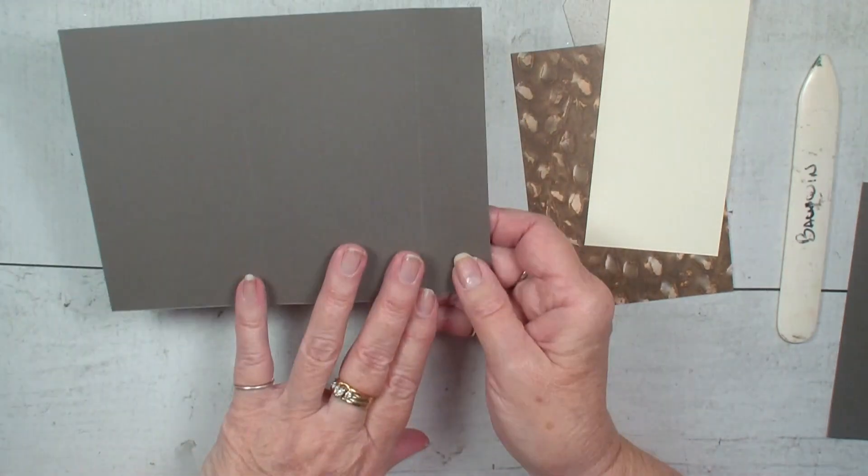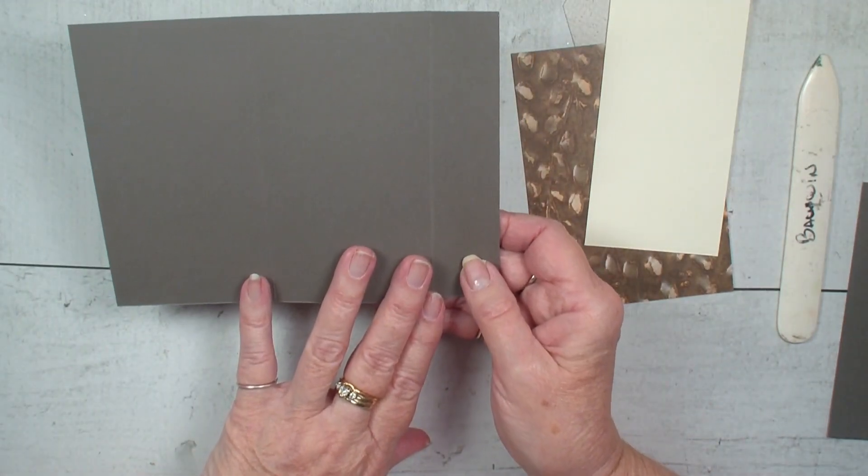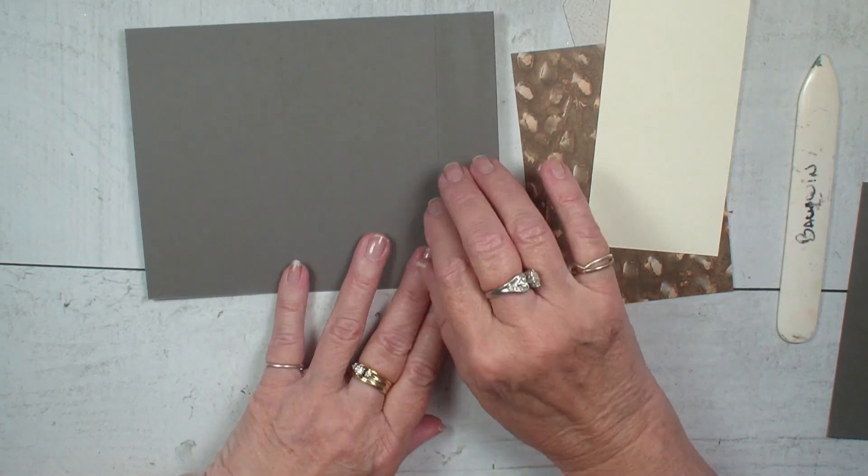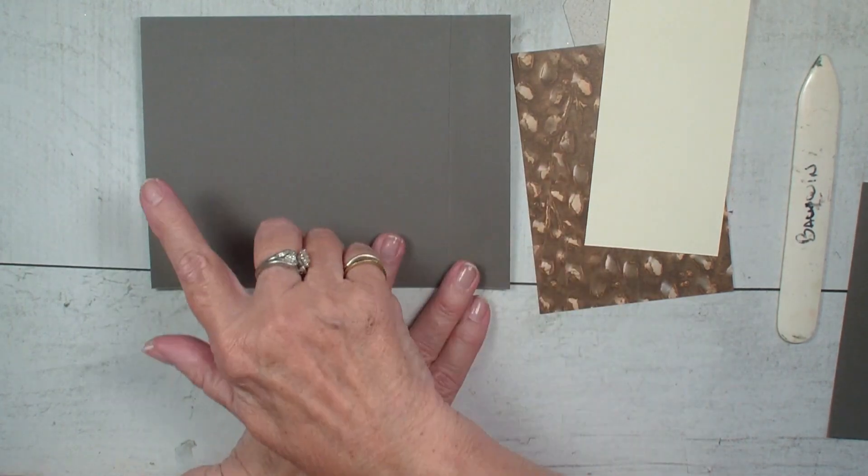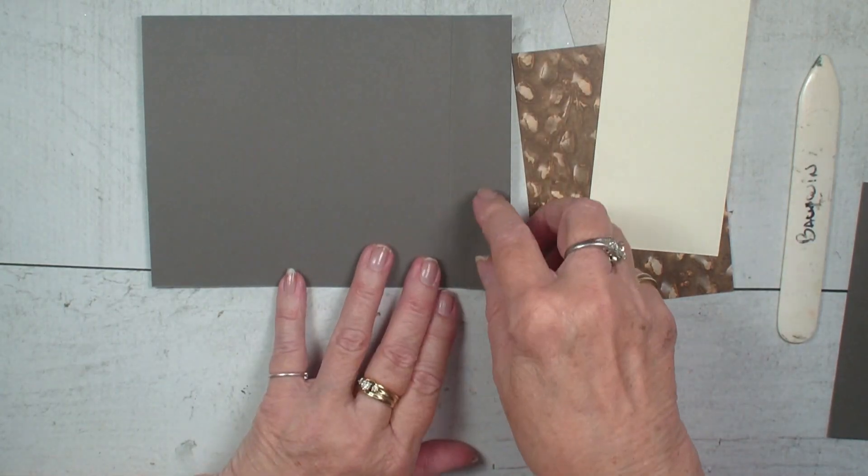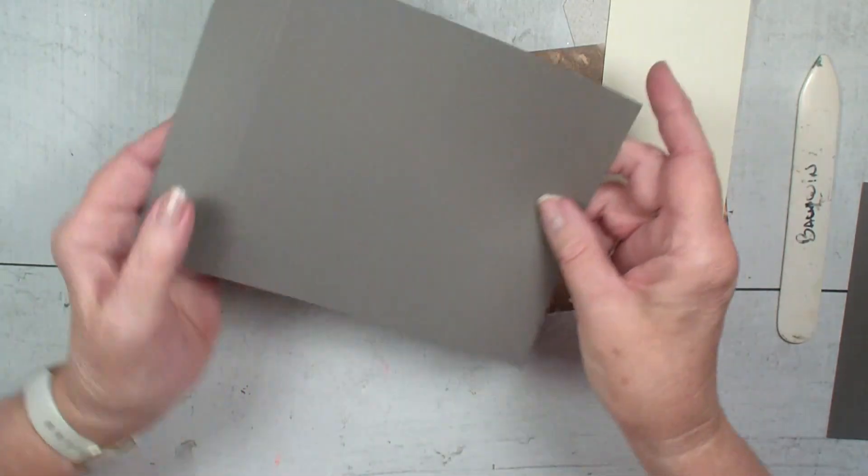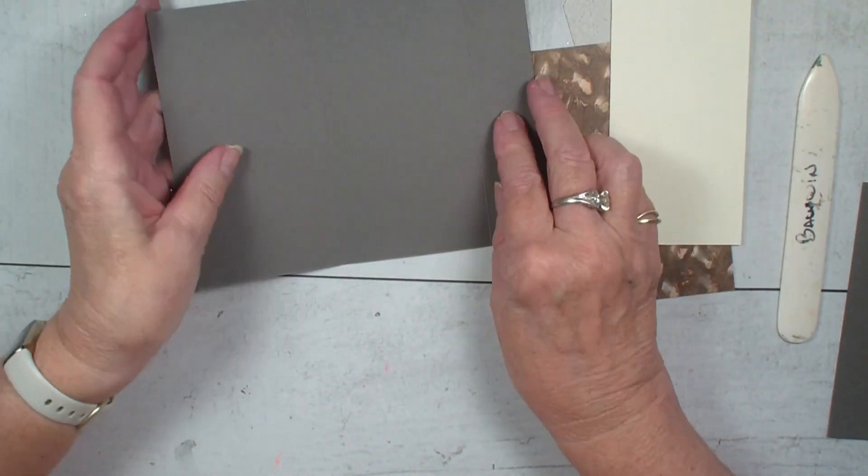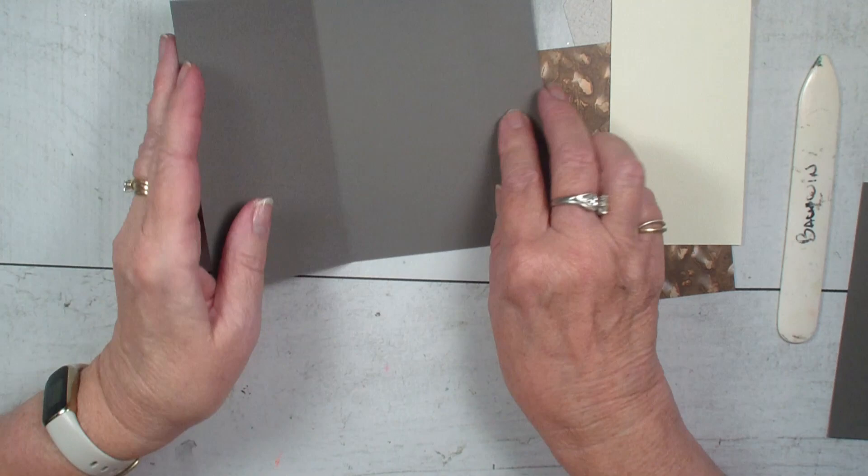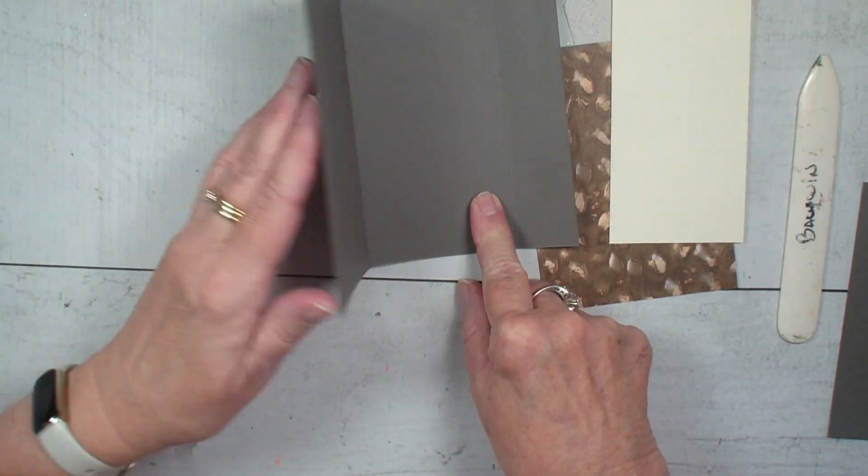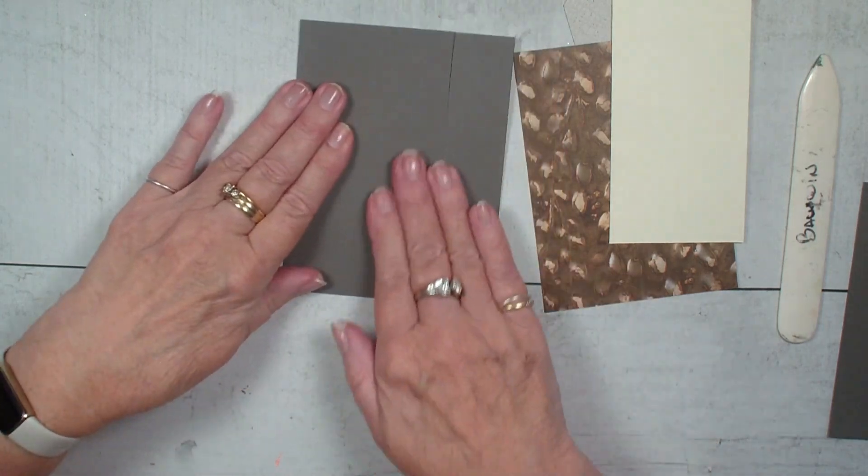I have a piece of cardstock. This is the pebbled path, which is an in color cardstock. It measures seven and a quarter by five and a half and I have scored it at the three inch mark and the six inch mark. So there's the three inch and there's the six and this is just a very simple fold.